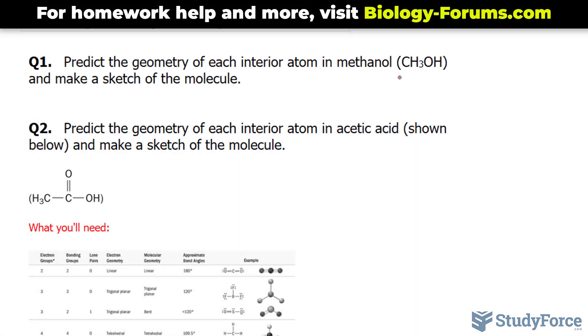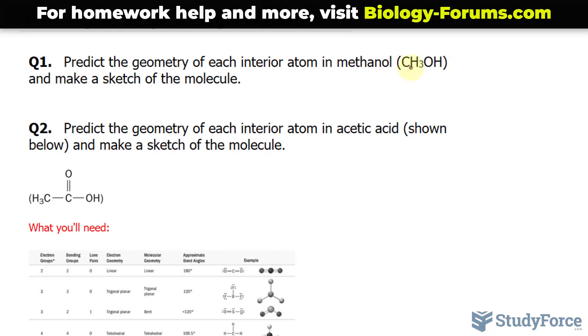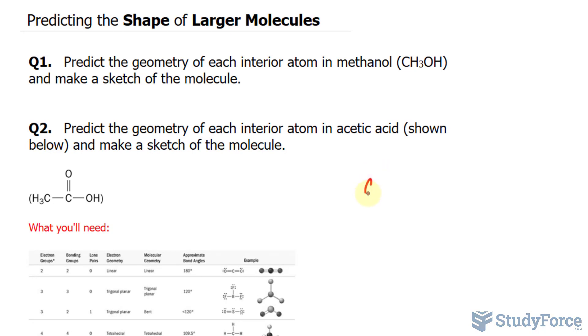Let's begin with the Lewis structure of methanol. We'll start off by creating a structure based on the order in which these atoms appear. So we have C with three hydrogen atoms bonded to it. The carbon is bonded to an oxygen, and that is bonded to a hydrogen.